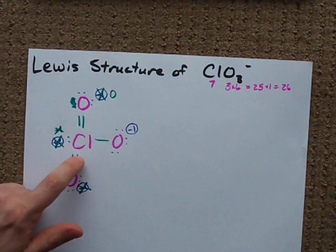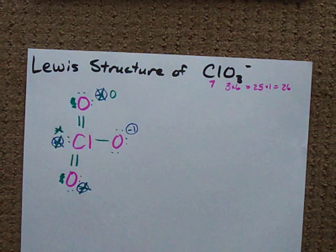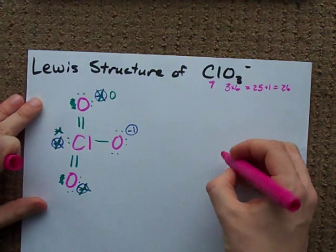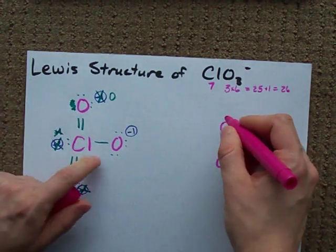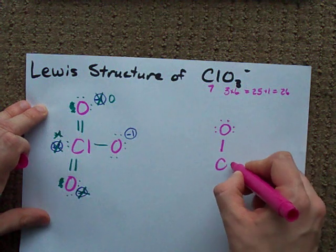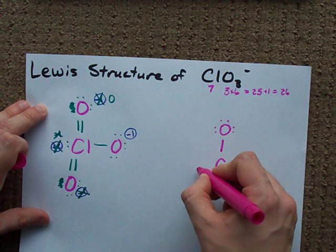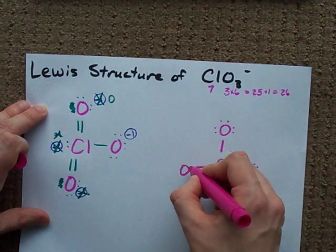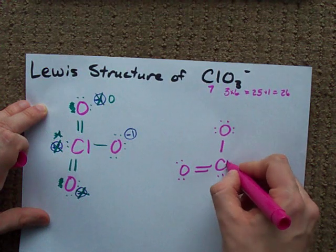The only reason we're allowed to do this is because chlorine can have an expanded octet. The final structure of this is chlorine with a single bond to an oxygen, chlorine with a double bond to an oxygen, chlorine with another double bond to an oxygen, and a lone pair also on the chlorine.